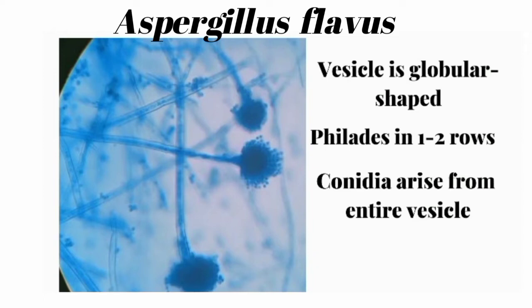Next one is Aspergillus flavus. The vesicle is globular shaped, similar to Aspergillus niger. Phialides are present in one or two rows. Conidia arise from the entire vesicle.